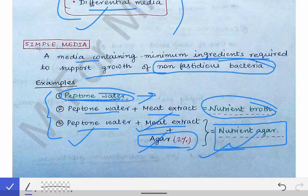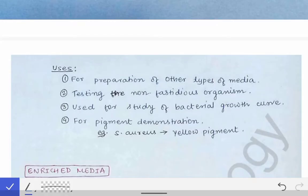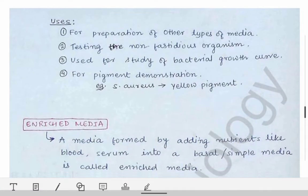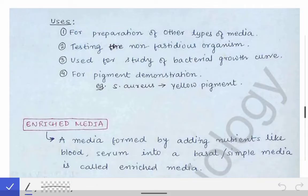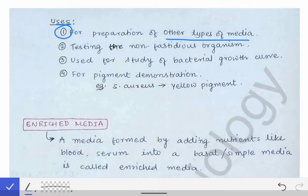Simple media means a media containing a minimum amount of ingredients required to support the growth of a particular organism. The uses of simple media are: first, it is used for preparation of other different types of media. Second, it is used for testing non-fastidious organisms — if an organism cannot grow on simple media, it is a fastidious organism requiring something extra.